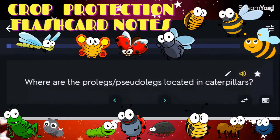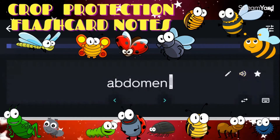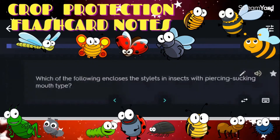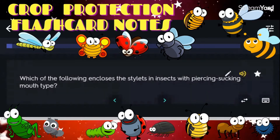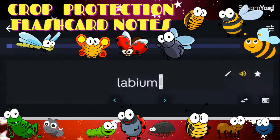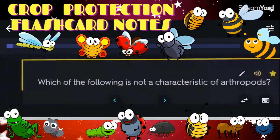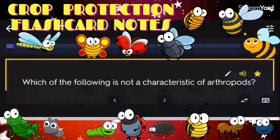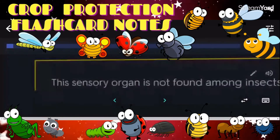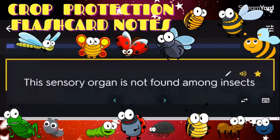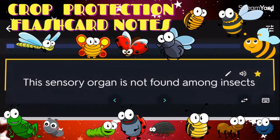Where are the prolegs (pseudolegs) located in caterpillars? Abdomen. Which of the following encloses the stylets in insects with piercing-sucking mouthparts? Labium. Which of the following is not a characteristic of arthropods? Radial symmetry. This sensory organ is not found among insects: chelicera.